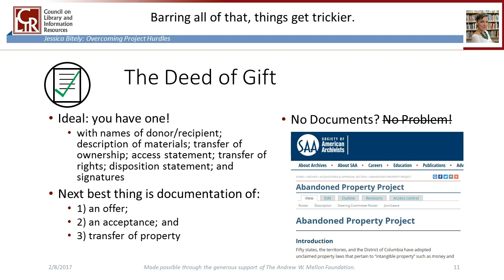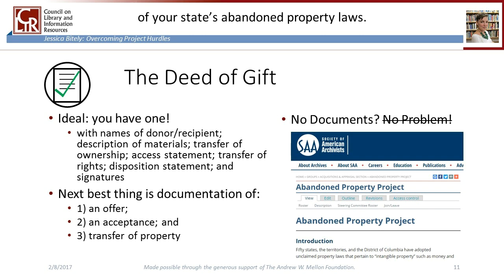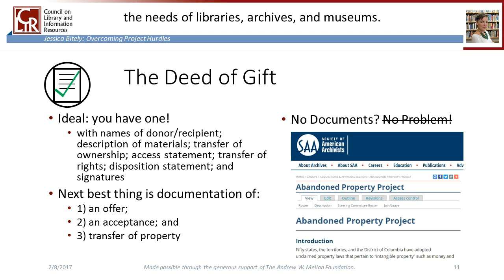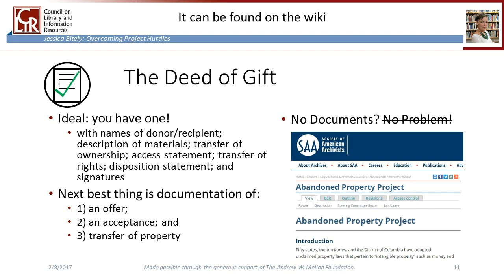Barring all of that, things get a little trickier. You can contact the donor or their family to see what might be possible, but if you can't find anyone to contact, you're going to have to move into research of your state's abandoned property laws. SAA's abandoned property project is a great place to get started, but not all states have this type of law, and some states don't specifically address the needs of libraries, archives, and museums. The New England Museum Association has a wonderful article about abandoned property and potential workflows, available on the wiki. And of course, if you can, seek legal advice.